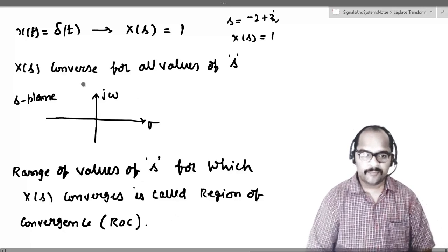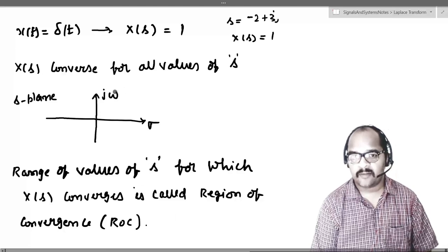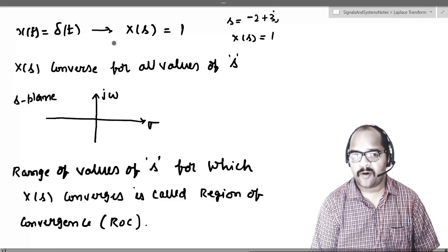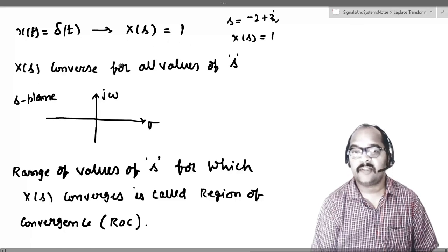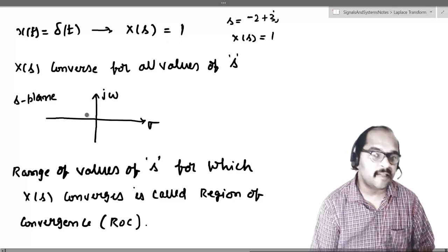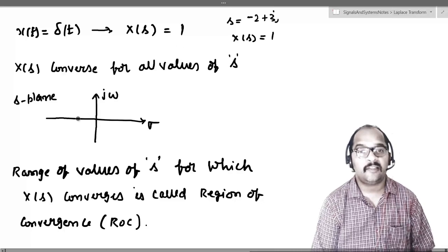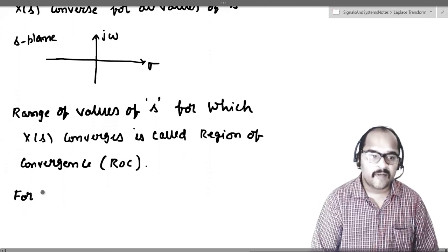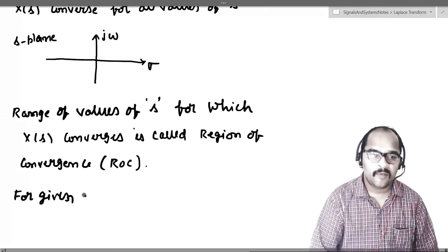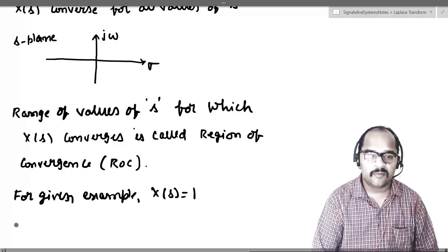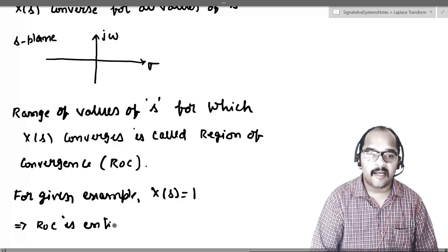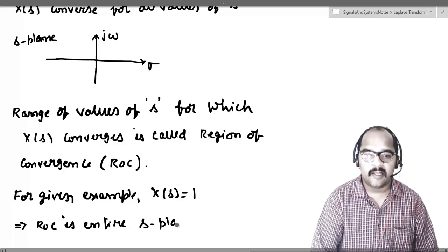Coming back to the example, we got X of s equal to 1. Our Laplace transform of delta of t, which equals 1, converges for all values of s. This means the Region of Convergence is the entire s-plane. For this given example, X of s equals 1, and the ROC is the entire s-plane.